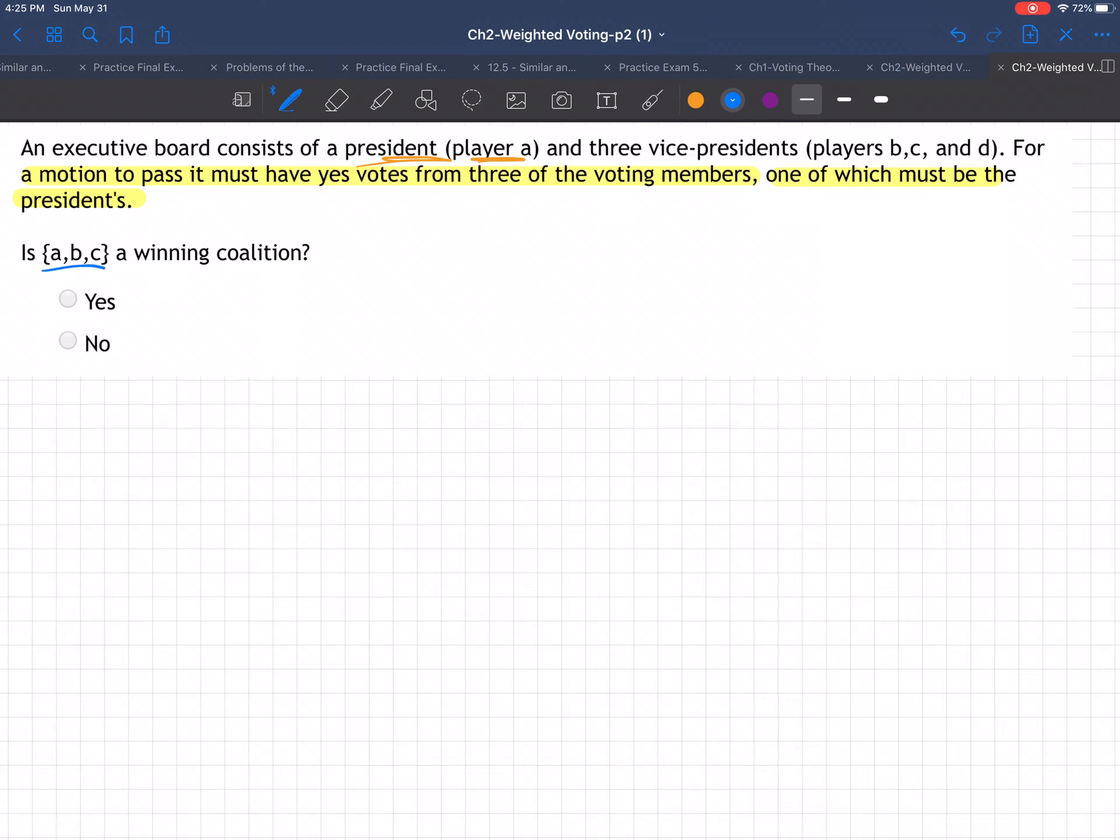So is ABC a winning coalition? Well, they have A, the president, and they have two other people, so that's three voting members. Yes, that's going to be a winning coalition.